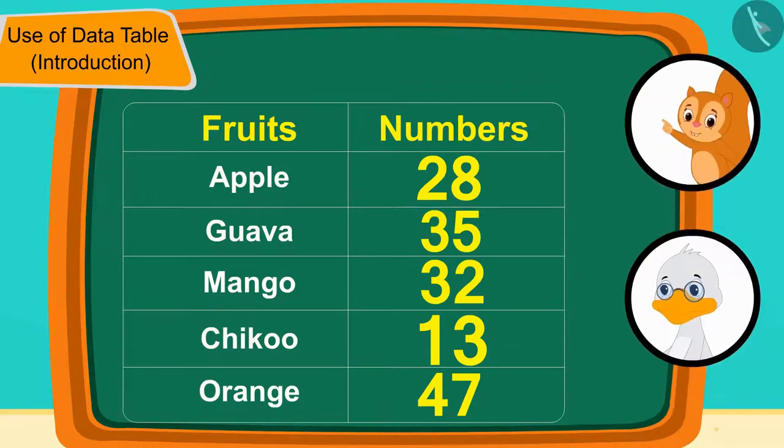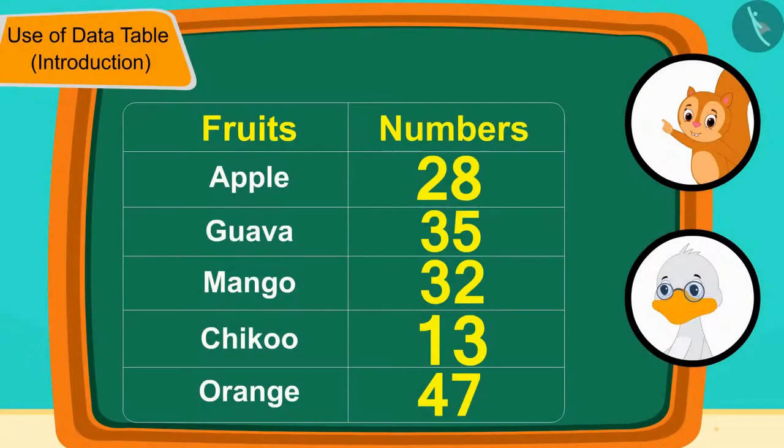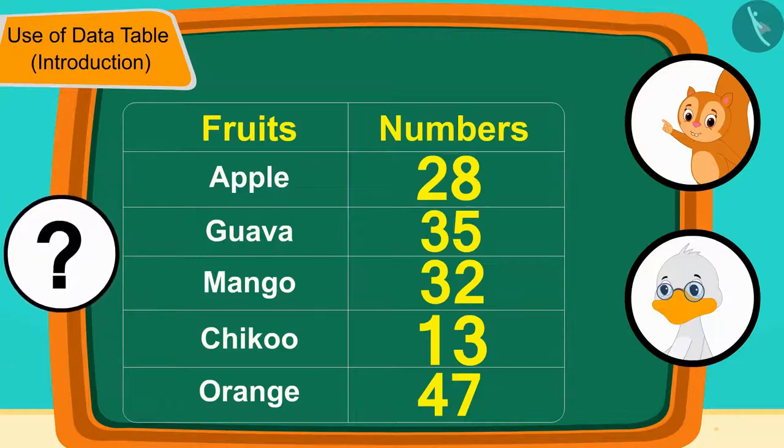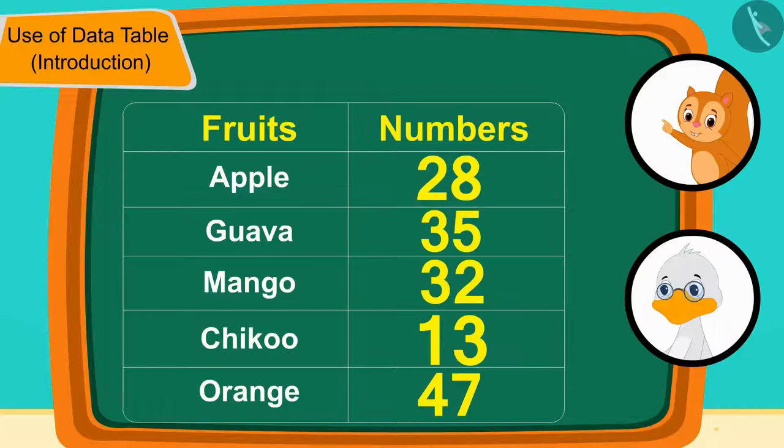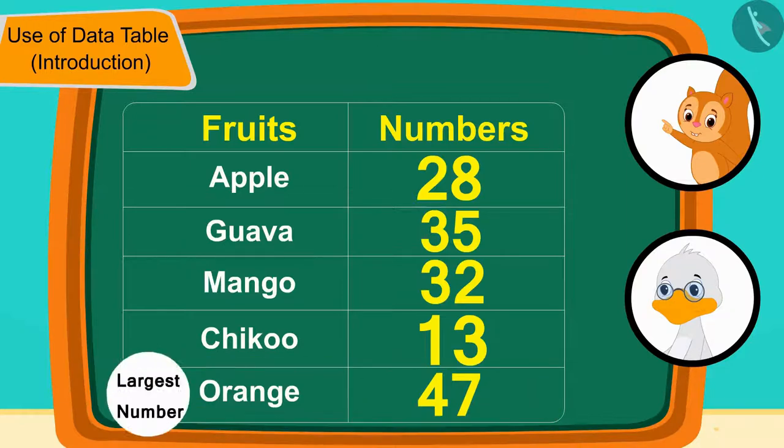Chanda asked uncle, Uncle, can you now tell which fruit is largest in number? Children, by looking at this table, can you tell which fruit is the largest in number? Well done, your answer is absolutely correct. The total number of oranges, 47, is the largest.